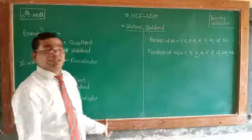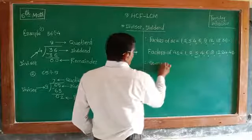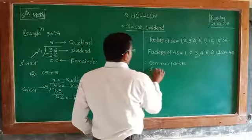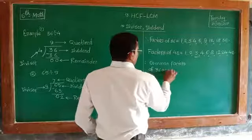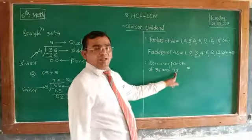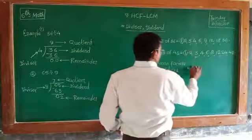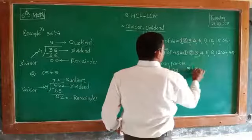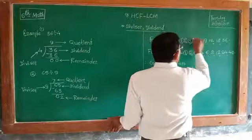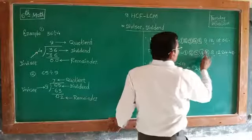The common factors of 36 and 48 are: 1, 2, 3, 4, 6, and 12.